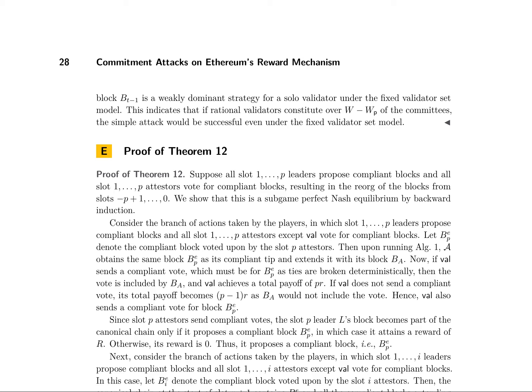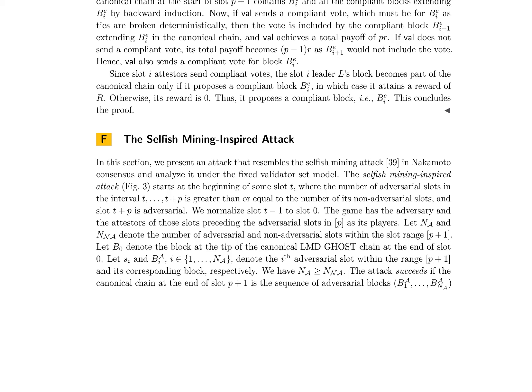The authors provide a proof of theorem 12, which demonstrates that if all slot 1...P leaders propose compliant blocks and all slot 1...P attestors vote for compliant blocks, resulting in the reorg of the blocks from slots P+1...0, this is a sub-game perfect Nash equilibrium. Lastly, the authors discuss an attack resembling the selfish mining attack in Nakamoto consensus, analyzing it under the fixed validator set model. This attack starts at the beginning of some slot T, where the number of adversarial slots in the interval T, T+P is greater than or equal to the number of its non-adversarial slots, and slot T+P is adversarial.